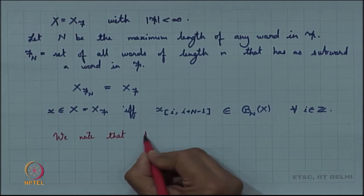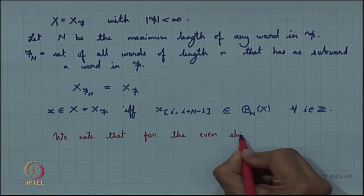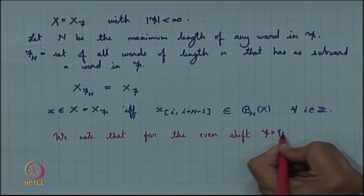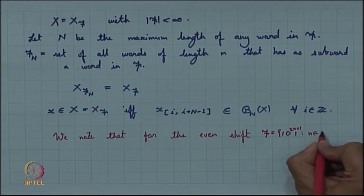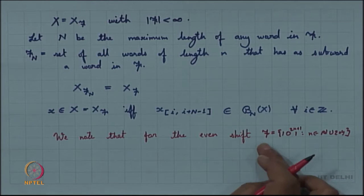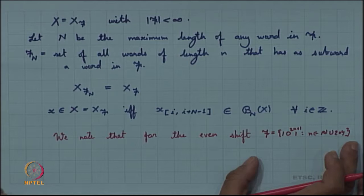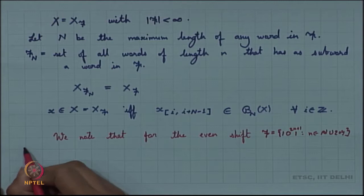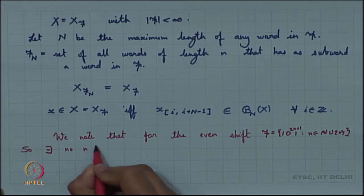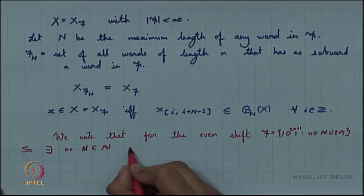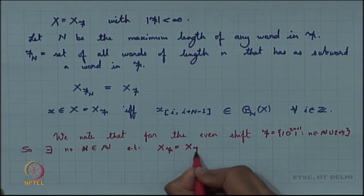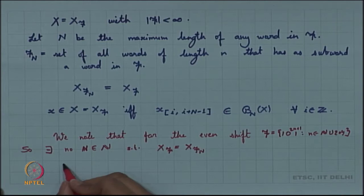For the even shift, the set F happens to be {1 0^{2n+1} 1 : n belongs to N union {0}}. There is no n for which I can write X_F as X_{F_n} — there exists no N such that X_F equals X_{F_N} — and hence the even shift is not a subshift of finite type.